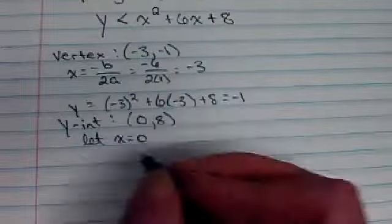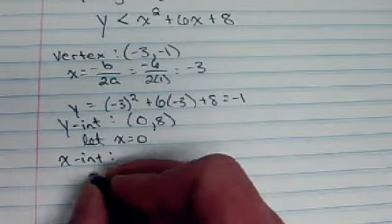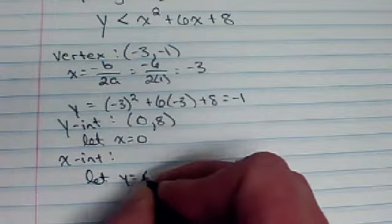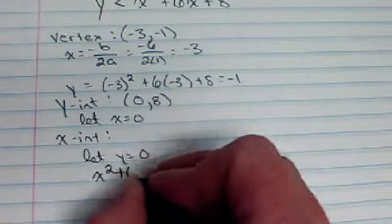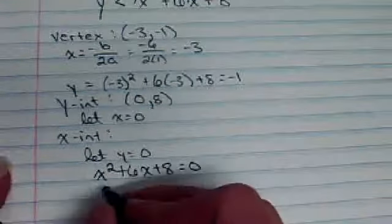The next key feature to find so that we can graph is our x-intercept. We find that by letting y be 0, which means we're going to take that function and set it equal to 0. And I think this one factors.